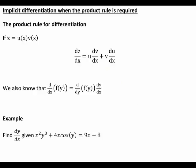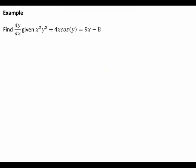Let's now look at an example where we need to use implicit differentiation. Finding dy/dx for the given expression, there is no nice way of making y the subject, so it is better to differentiate term by term with respect to x. We are going to need the product rule twice: first for x squared times y cubed, and again for 4x times cos y. Let's look at each of these in turn.